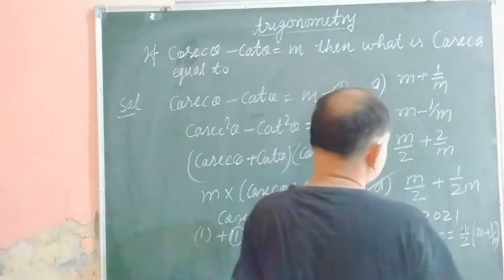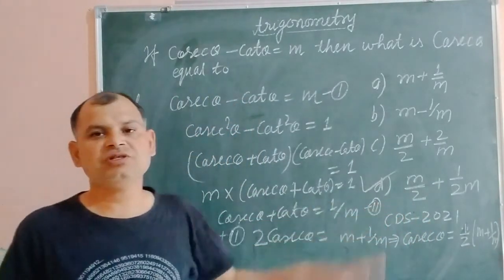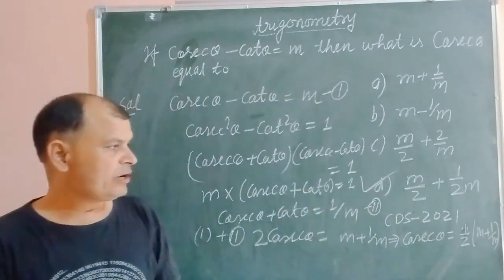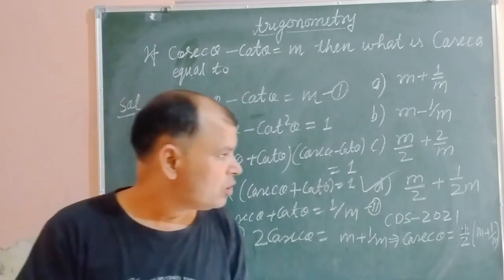So this is the answer, d is the answer of this question. So cosec theta equal to m by 2 plus 1 upon 2m.